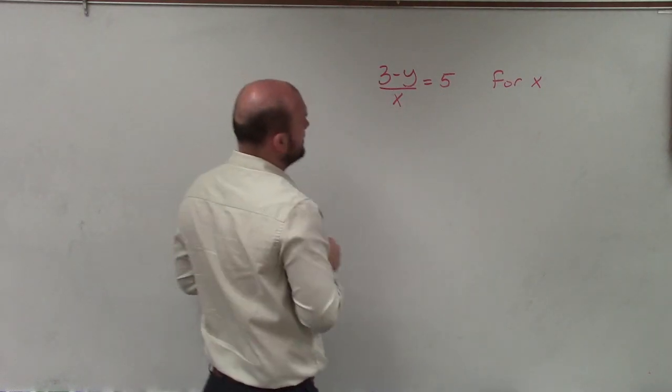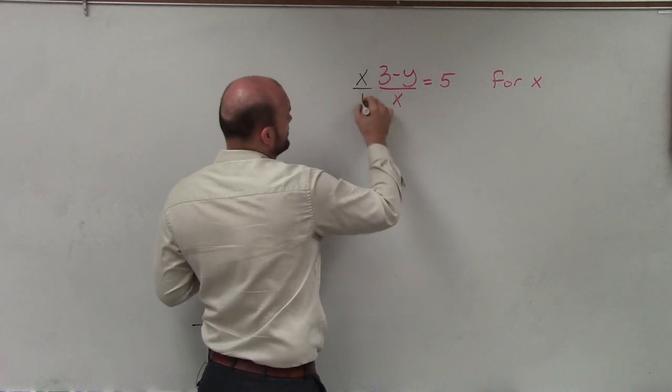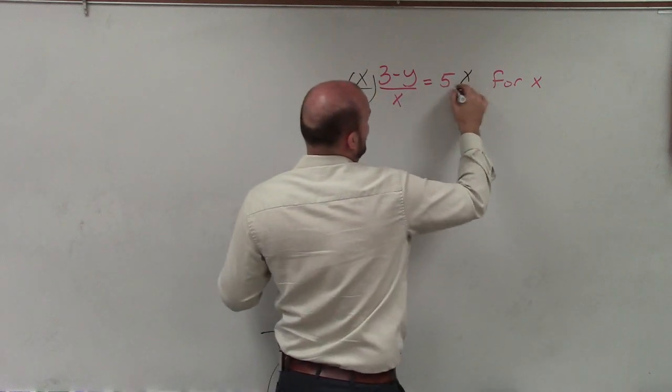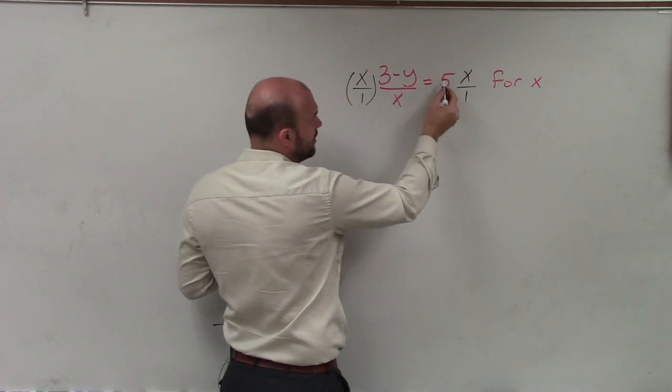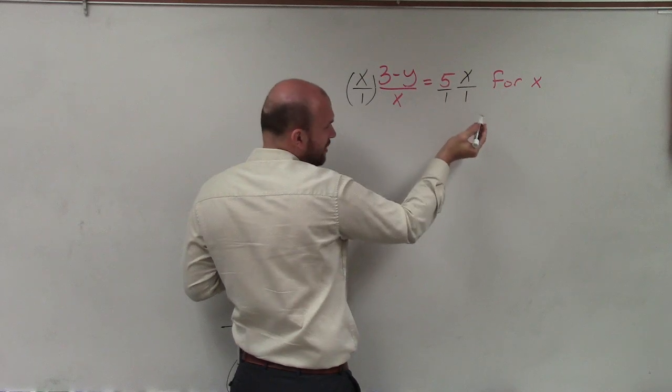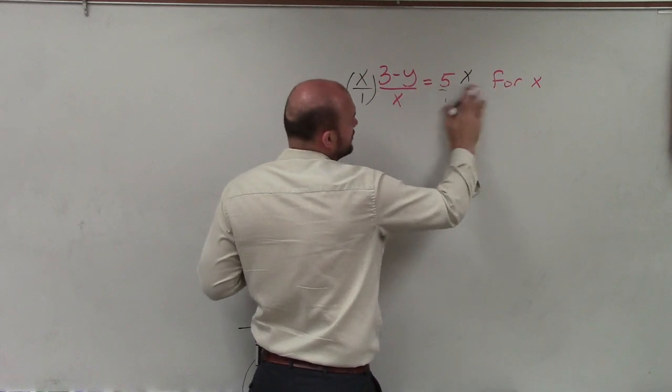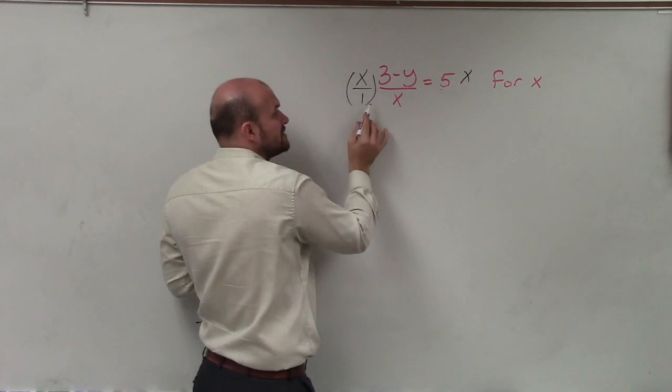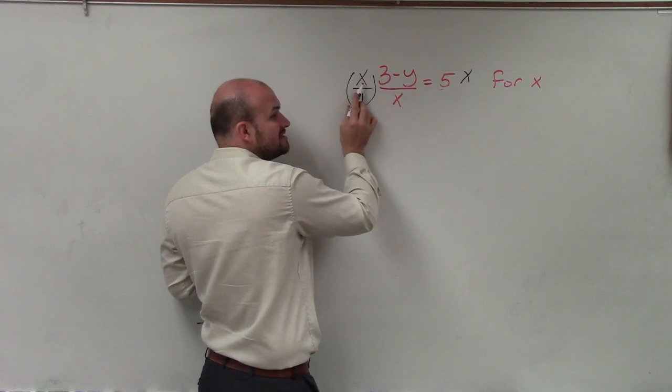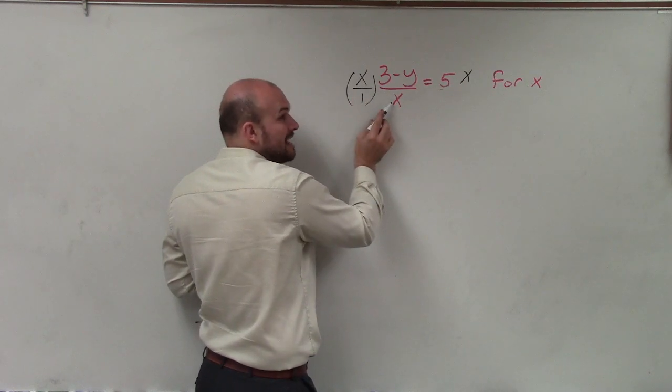So to do that, I'm going to multiply both sides by x in the numerator, and I can represent that by x over 1. Now, notice x over 1 times 5, really 5 is over 1 as well. So we don't really need to write the over 1's, but it's helpful to write x over 1 here so you know that x is in the numerator here and x is in the denominator here.